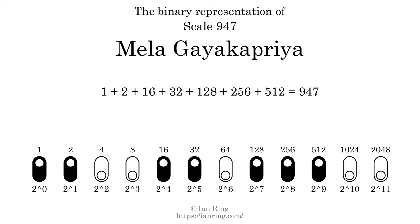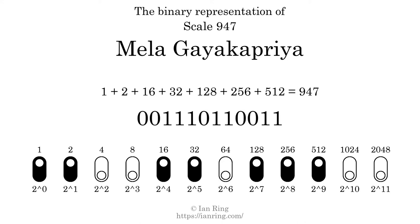That is why the scale number, in decimal, is 947. The scale number not only enumerates the scale with a unique index, but it also literally describes the tonal content of the scale. Represented as a binary number in base 2, the scale number is 001110110011.